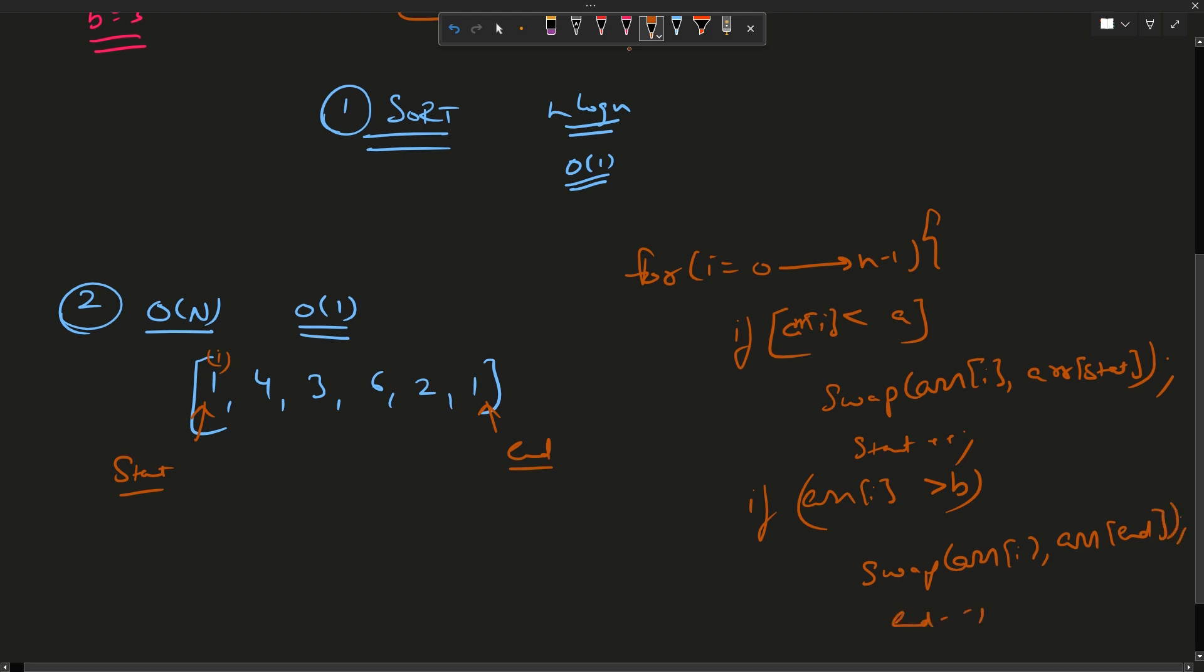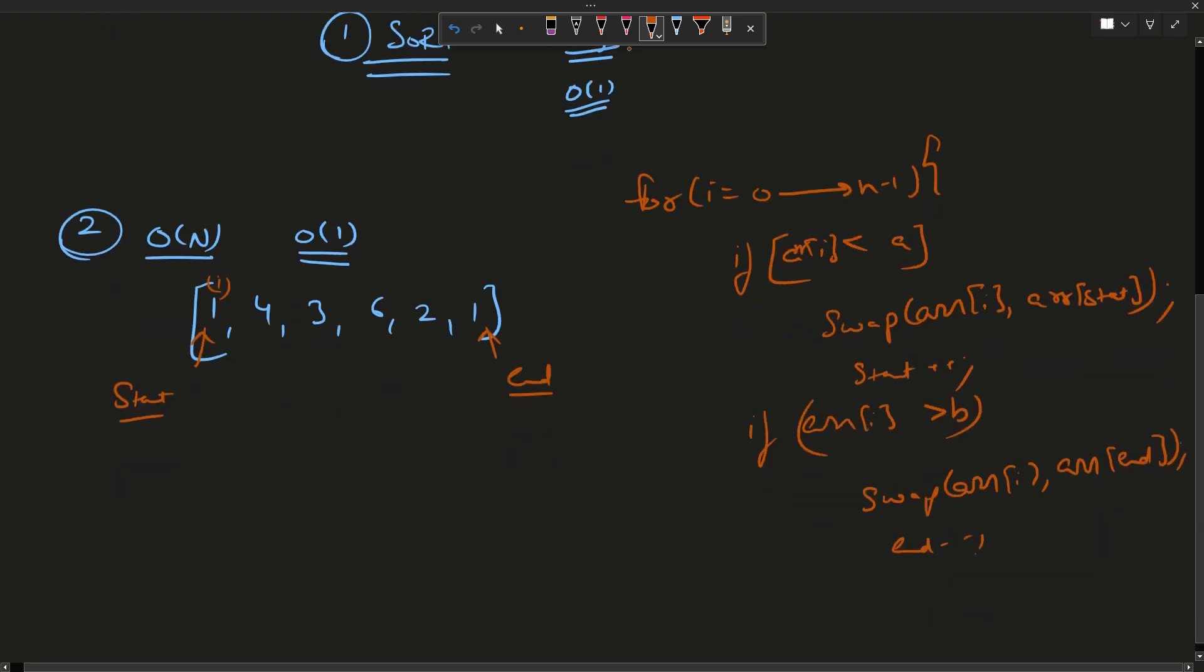What I am doing is placing all the elements less than a here, all the elements greater than b here, and all the elements in the between range will automatically come here.